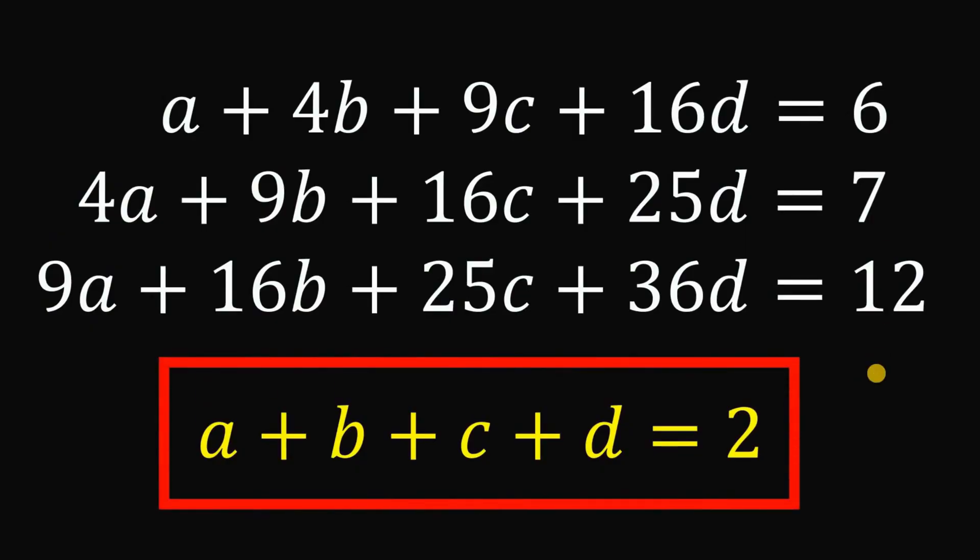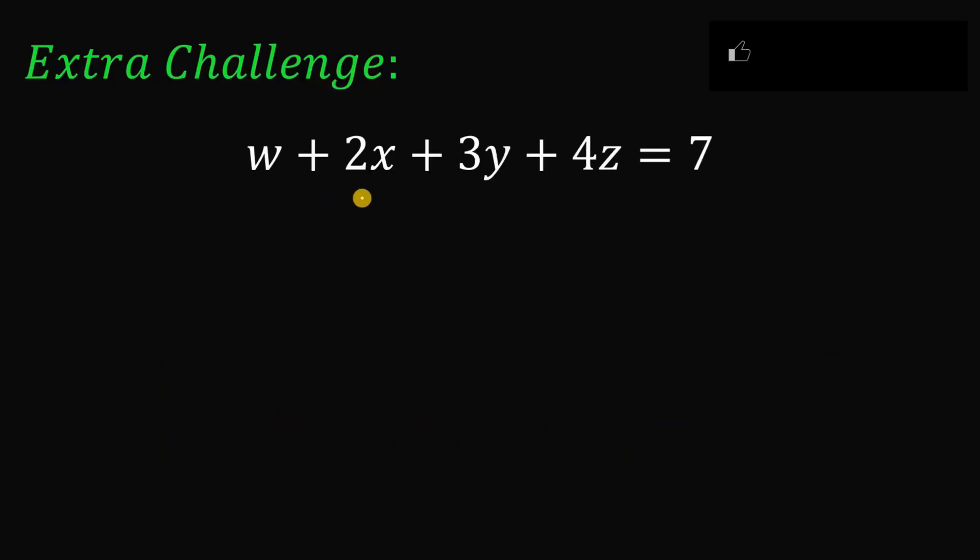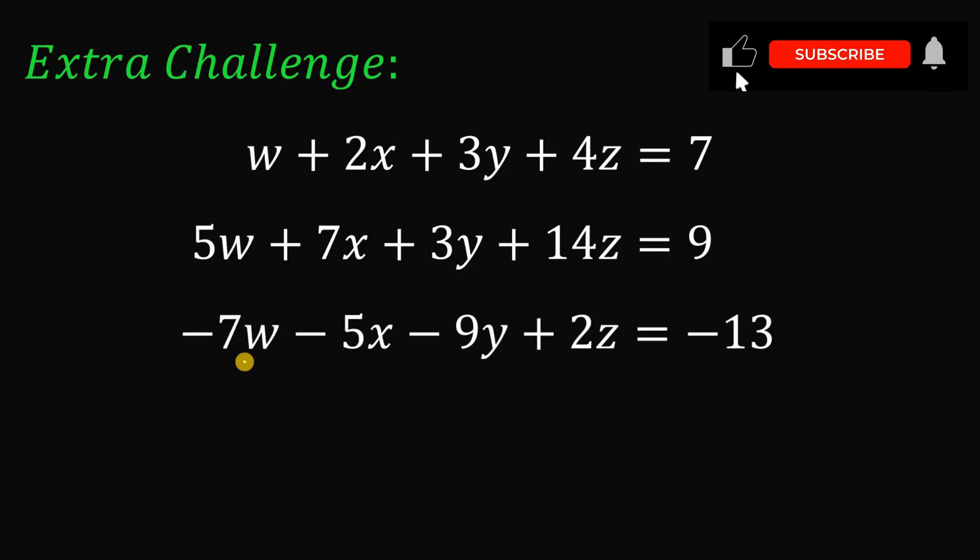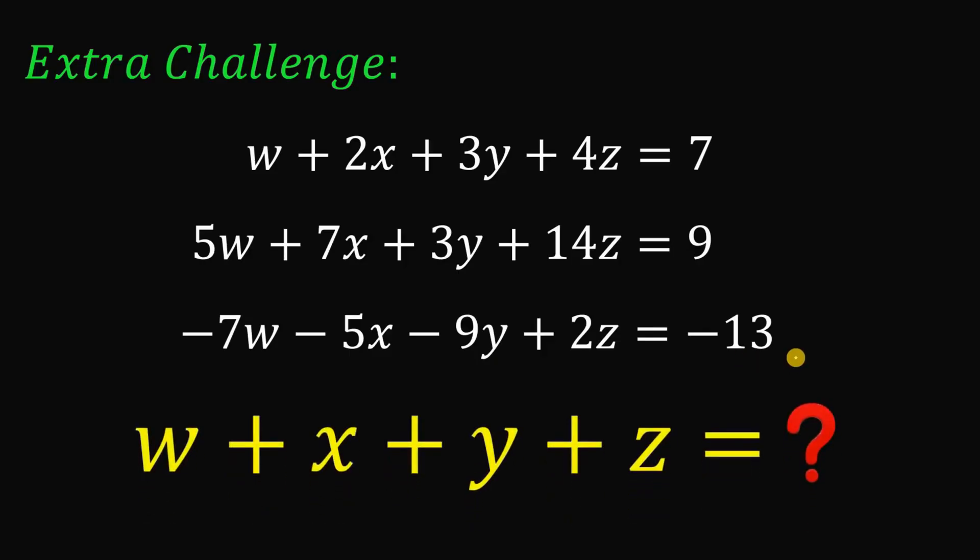Before we end this video, let's have an extra challenge. Given these equations: w plus 2x plus 3y plus 4z equals 7, 5w plus 7x plus 3y plus 14z equals 9, negative 7w minus 5x minus 9y plus 2z equals negative 13. Your goal is to find the numerical value of w plus x plus y plus z. And as always,